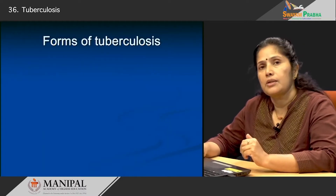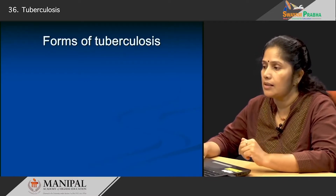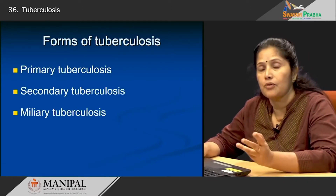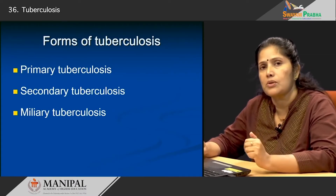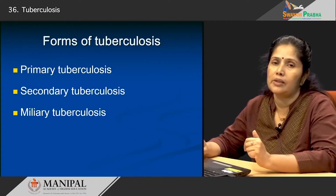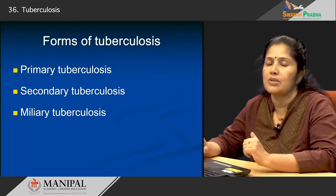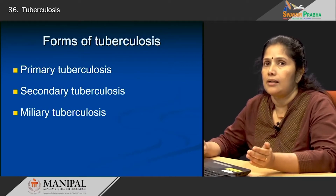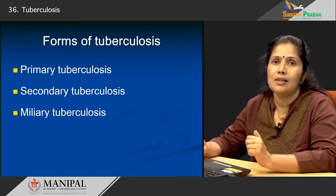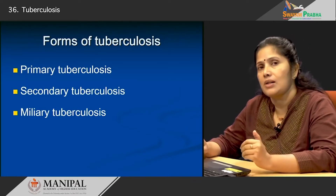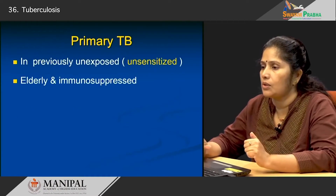Now let us look at the three different forms of this disease. The disease presents in three forms: primary tuberculosis, secondary tuberculosis, and miliary tuberculosis. We will look at each of these forms and also the morphologic changes that occur in the lung in each, as well as the course of the disease. Let us start first with primary tuberculosis.